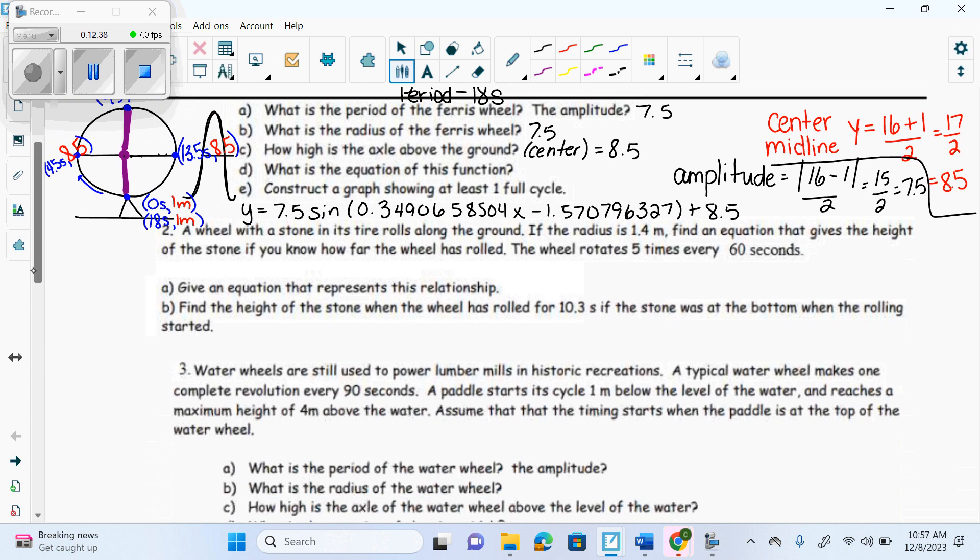Okay, guys. This one here is a wheel rolling on the ground. It has a radius of 1.4. So, we have a wheel rolling on the ground. Still split it into four. We have a radius of 1.4. It's 1.4 here. 1.4 here. A wheel with a stone in its tire rolls along the ground. If it has a radius of 1.4, find an equation that gives the height of the stone if you know how far the wheel has rolled. The wheel rotates 5 times every 60 seconds. Let's deal with the time first.